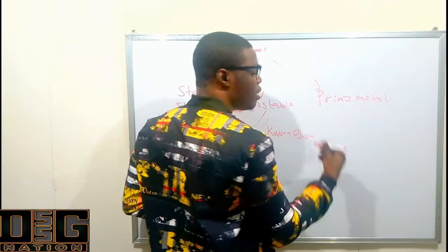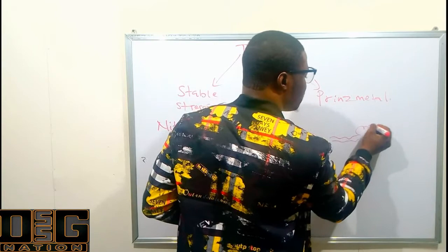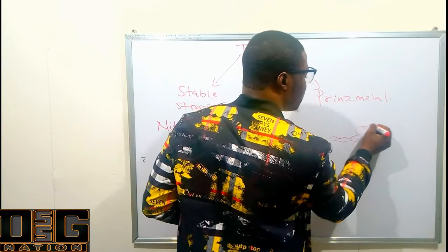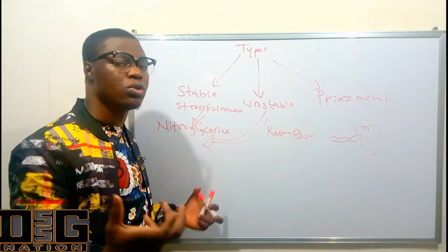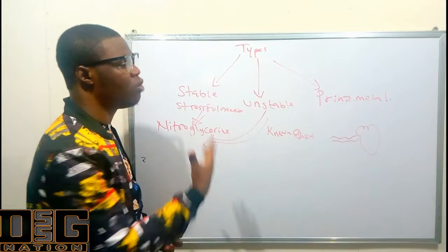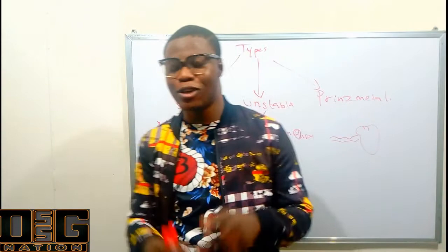Prinzmetal angina pectoris occurs due to constriction of the coronary artery that supplies the heart. When the coronary artery constricts, it reduces the amount of oxygen supply to the heart. Those are the three types of angina pectoris.